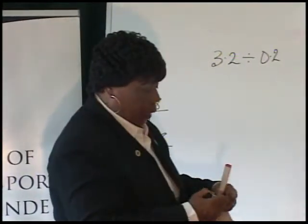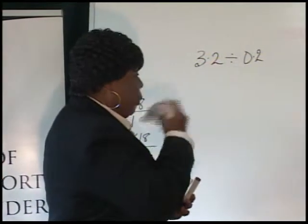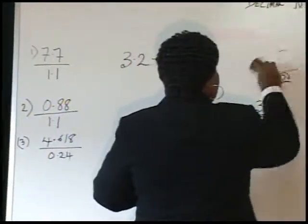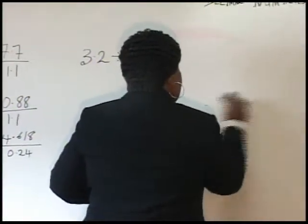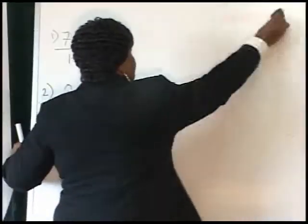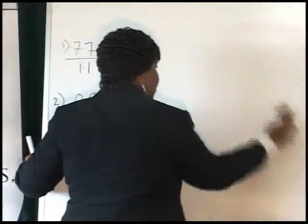7.7 over 1.1 in contrast to 0.88 over 1.1. And we'll end up with this last one here for our division to make you see that we can have 4.618 divided by 0.24. So those are our division. And we're going to use over here as our work site.